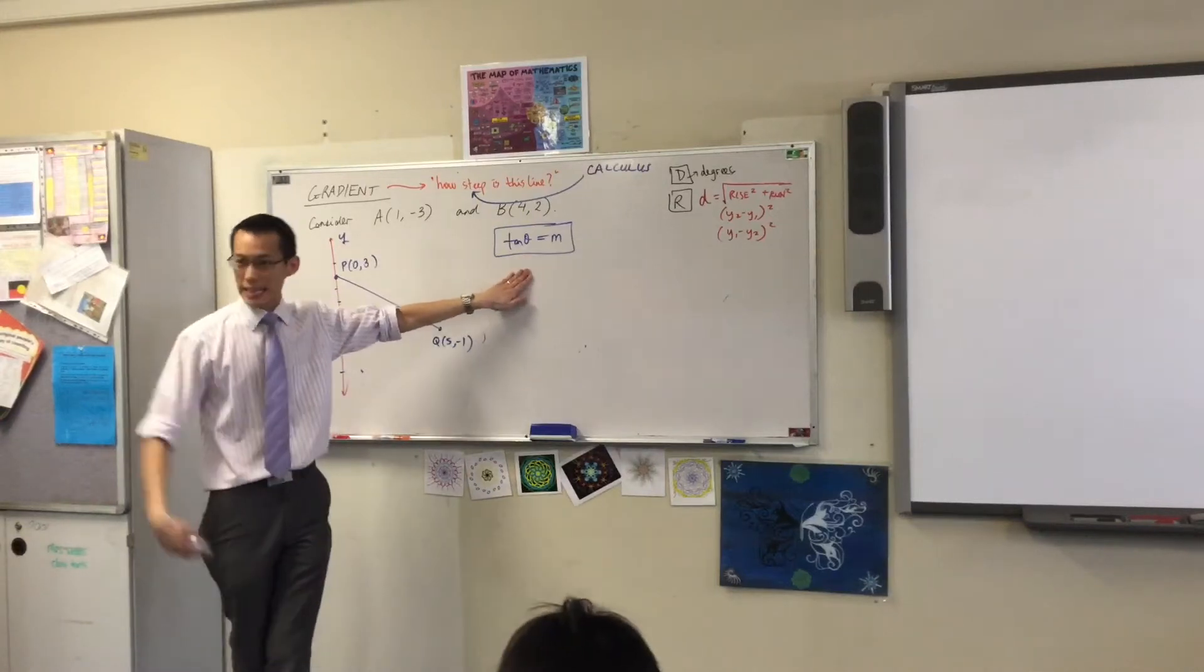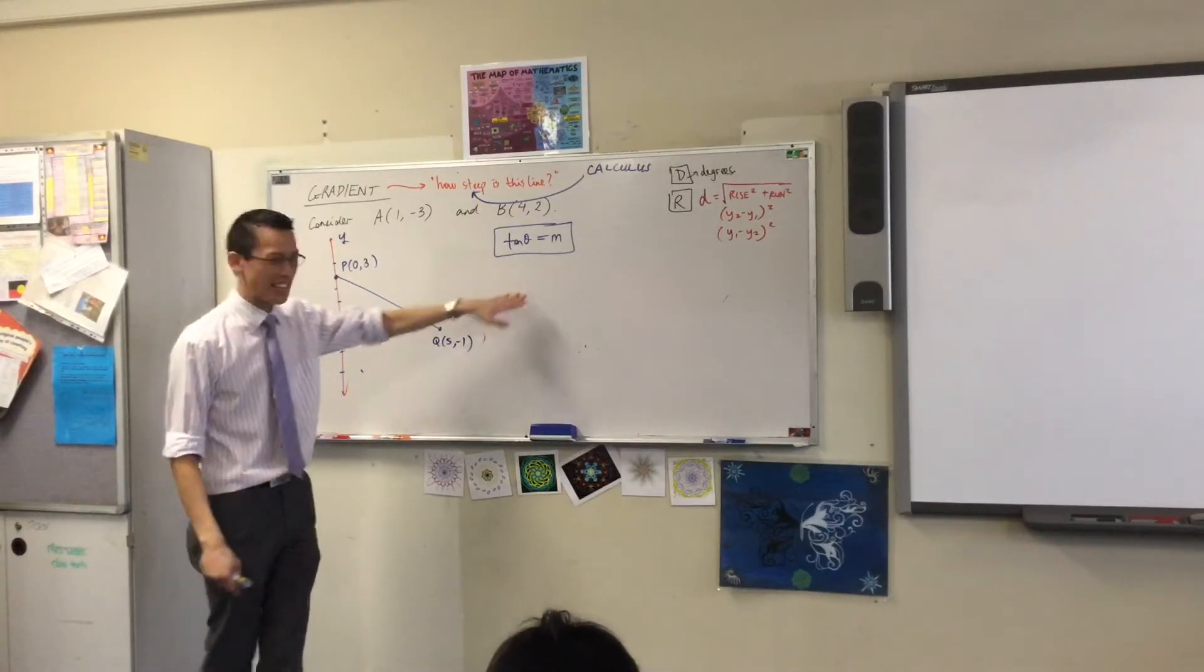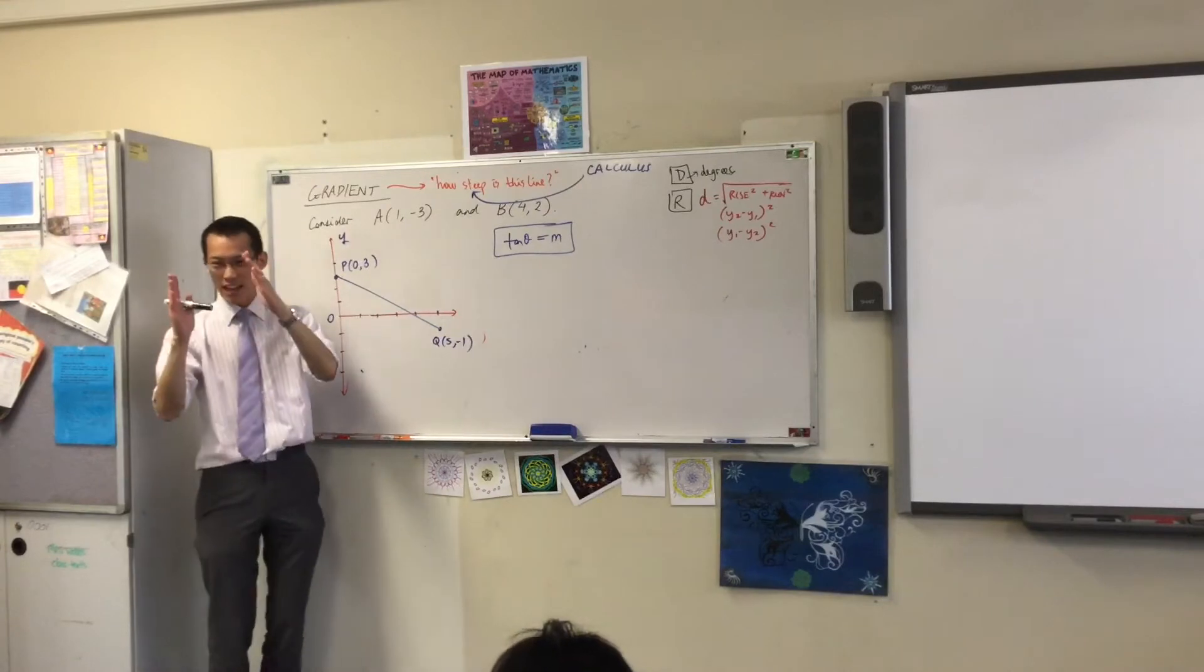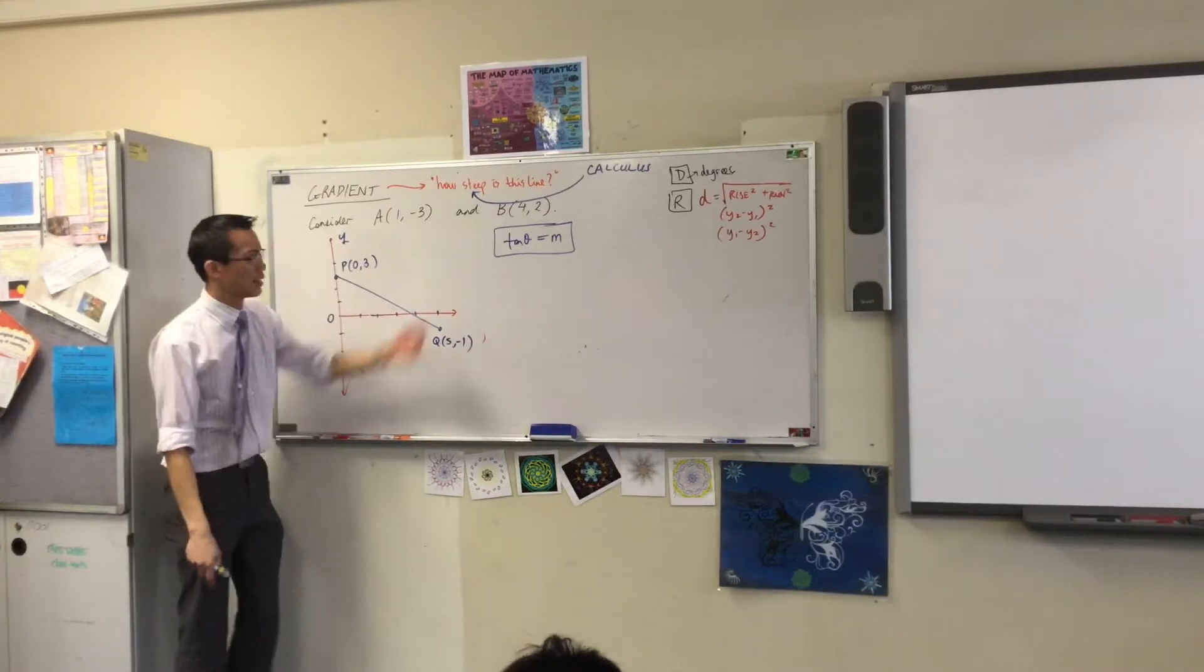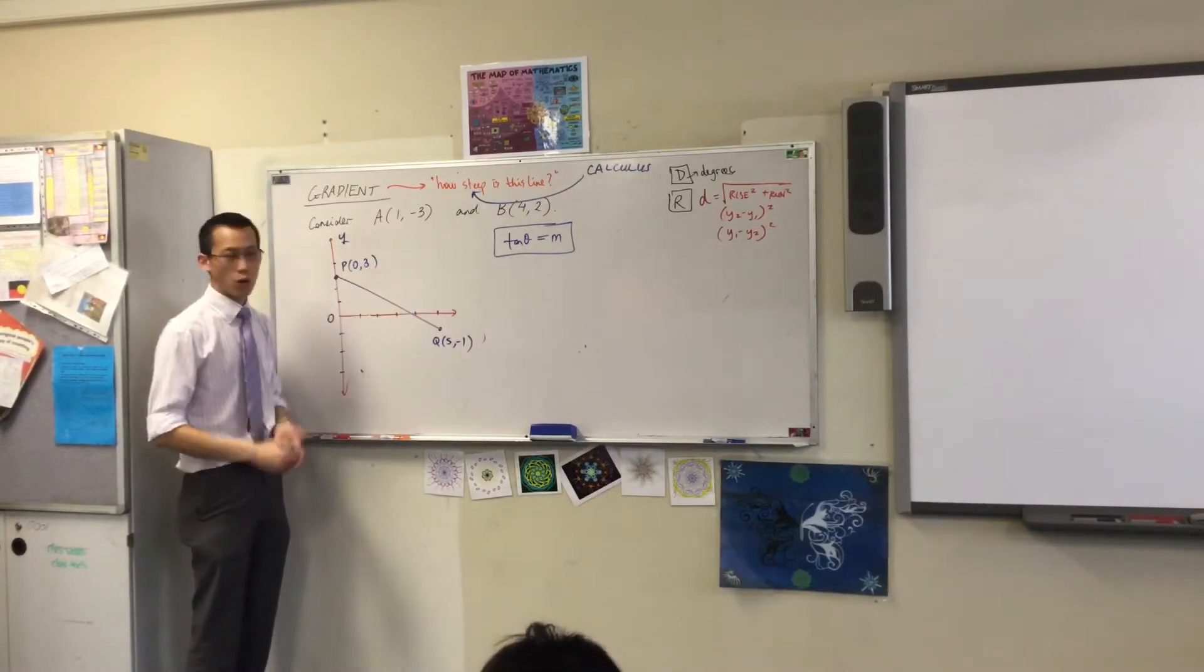This is the last thing that you wrote, tan theta equals n. You want to find an angle of inclination, how much the angle is off from the horizontal, this is how you do it. It's really easy, right? All you need is the gradient.